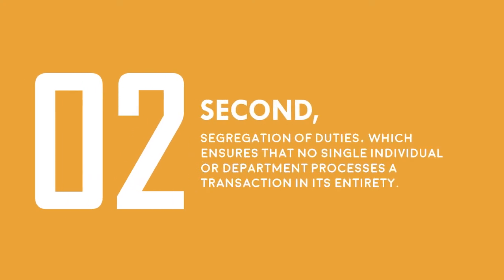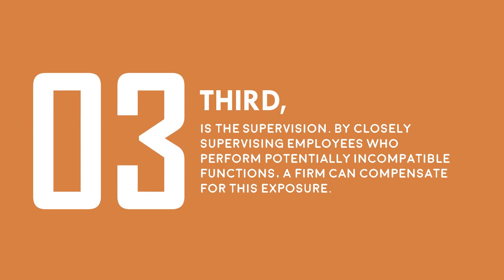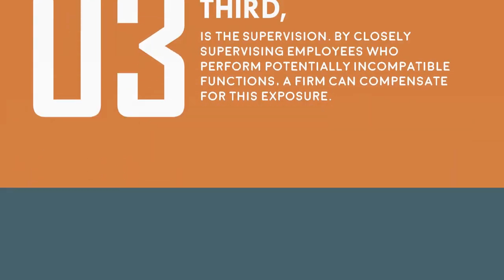Second, the segregation of duties, which ensures that no single individual or department processes a transaction in its entirety. Third is supervision. By closely supervising employees who perform potentially incompatible functions, a firm can compensate for this exposure.